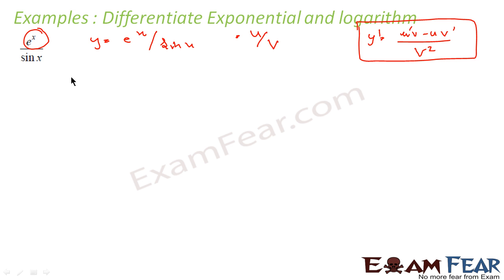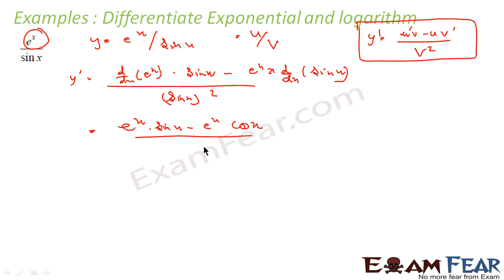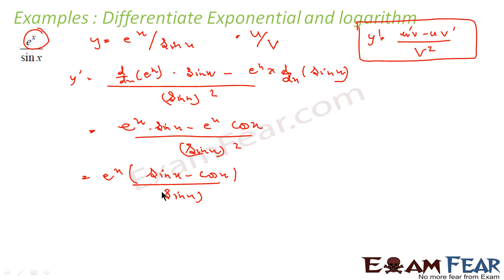Using the quotient rule: if y equals u by v, then y dash equals (u dash·v minus u·v dash) divided by v squared. So y dash equals [d/dx(e^x)·sin x minus e^x·d/dx(sin x)] divided by sin²x. Since d/dx of e^x is e^x and d/dx of sin x is cos x, this simplifies to e^x(sin x minus cos x) divided by sin²x. That is the answer.